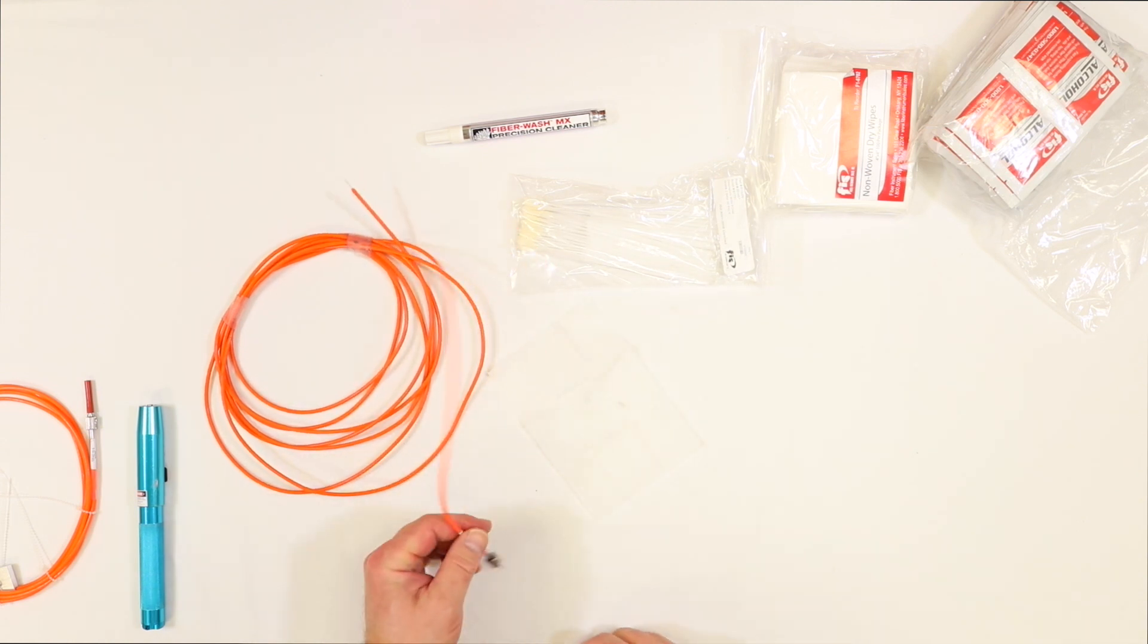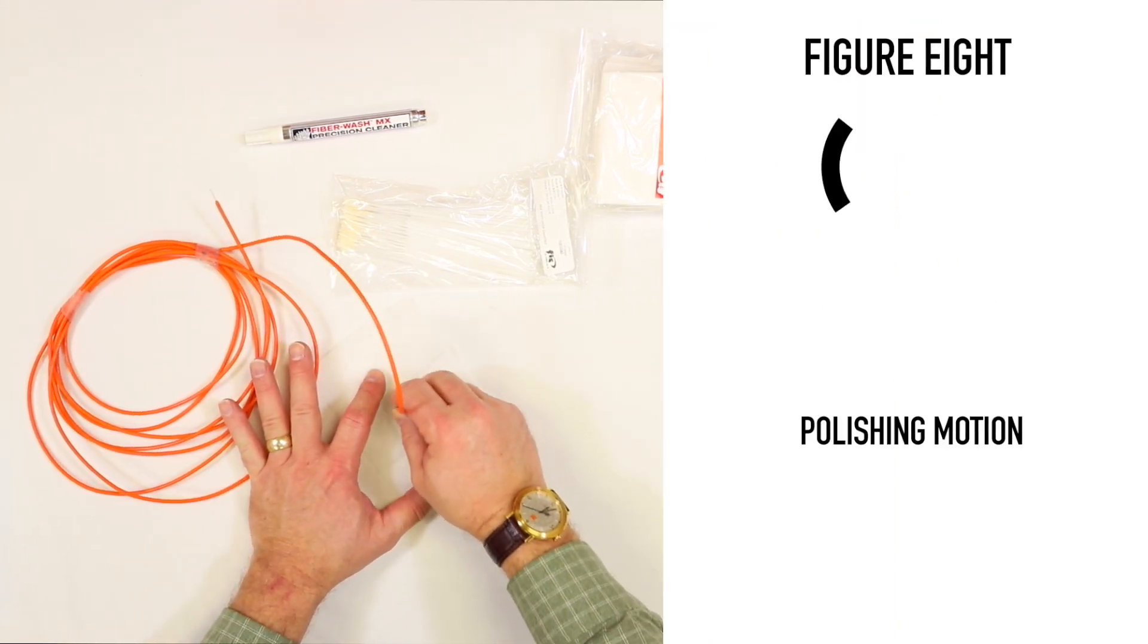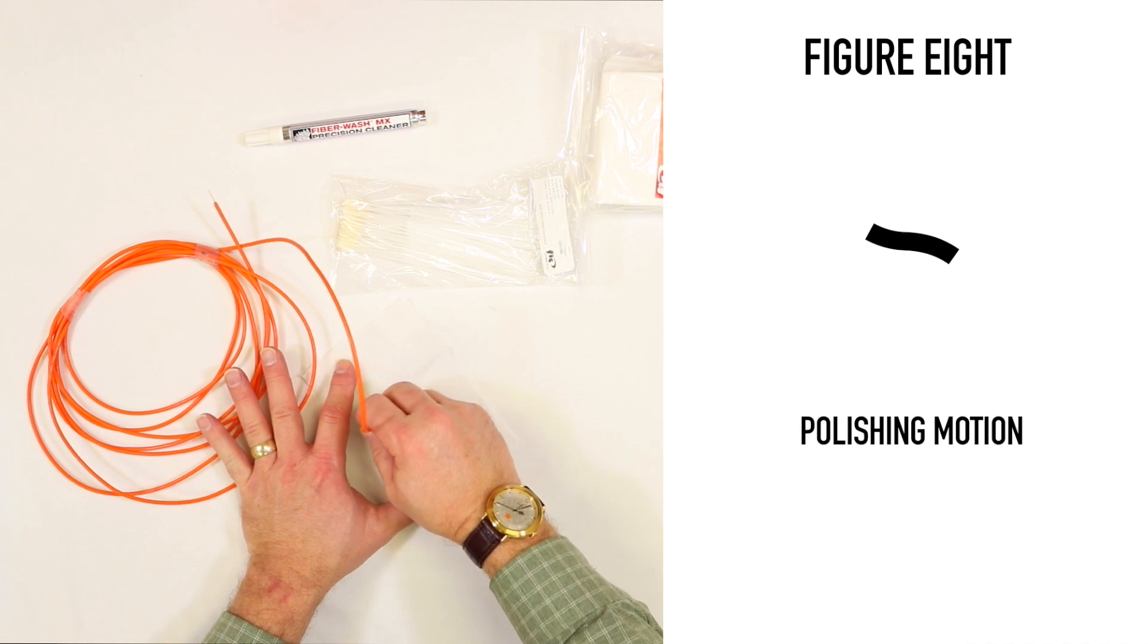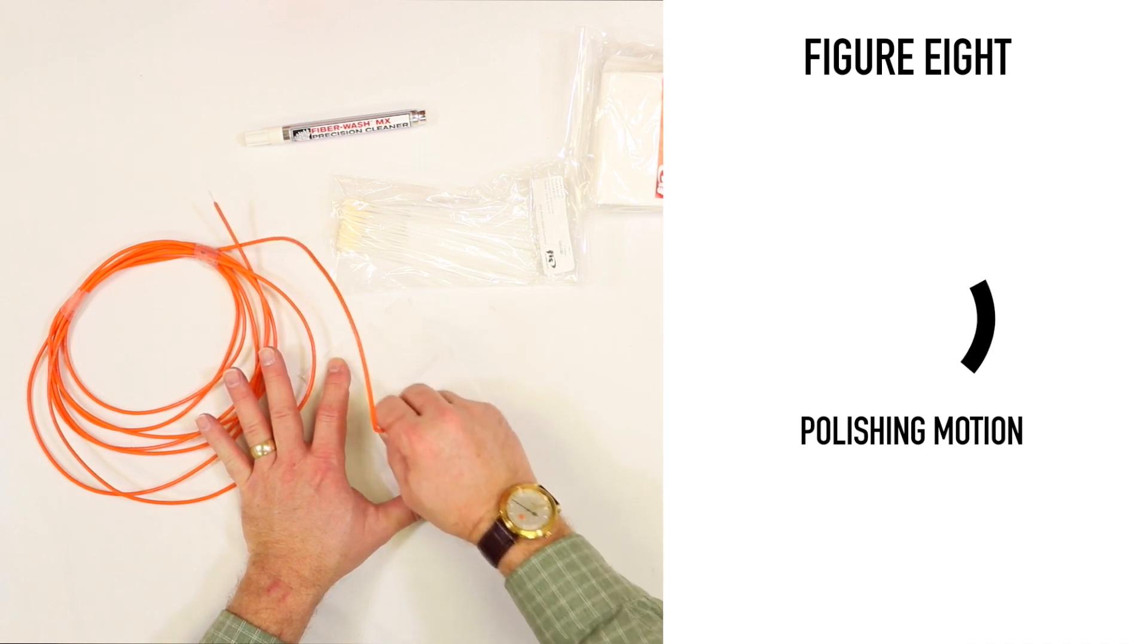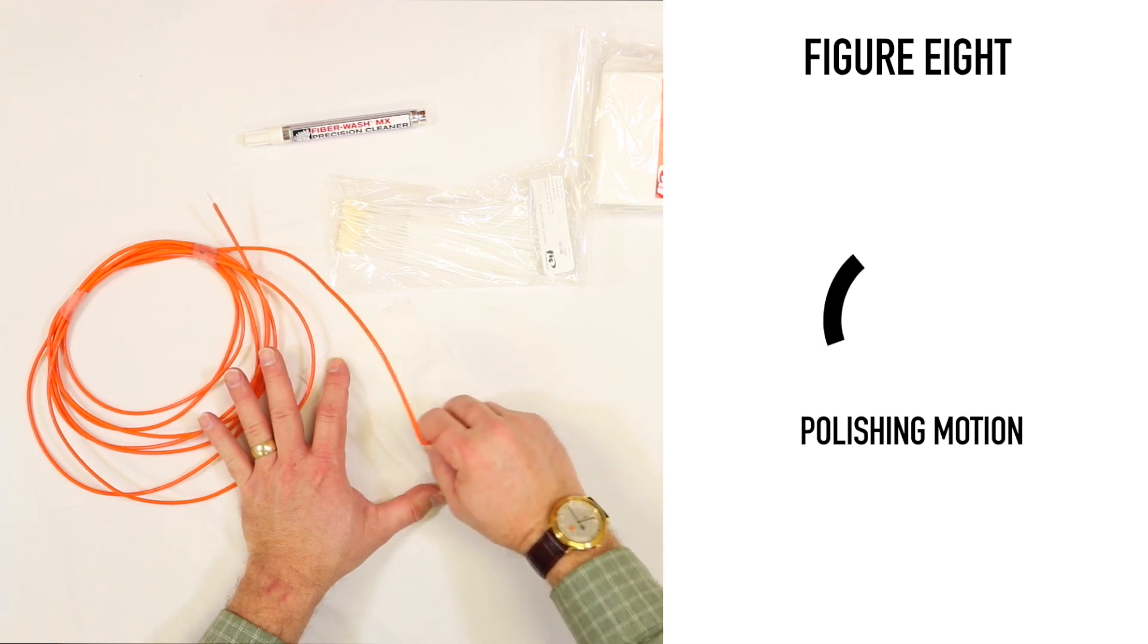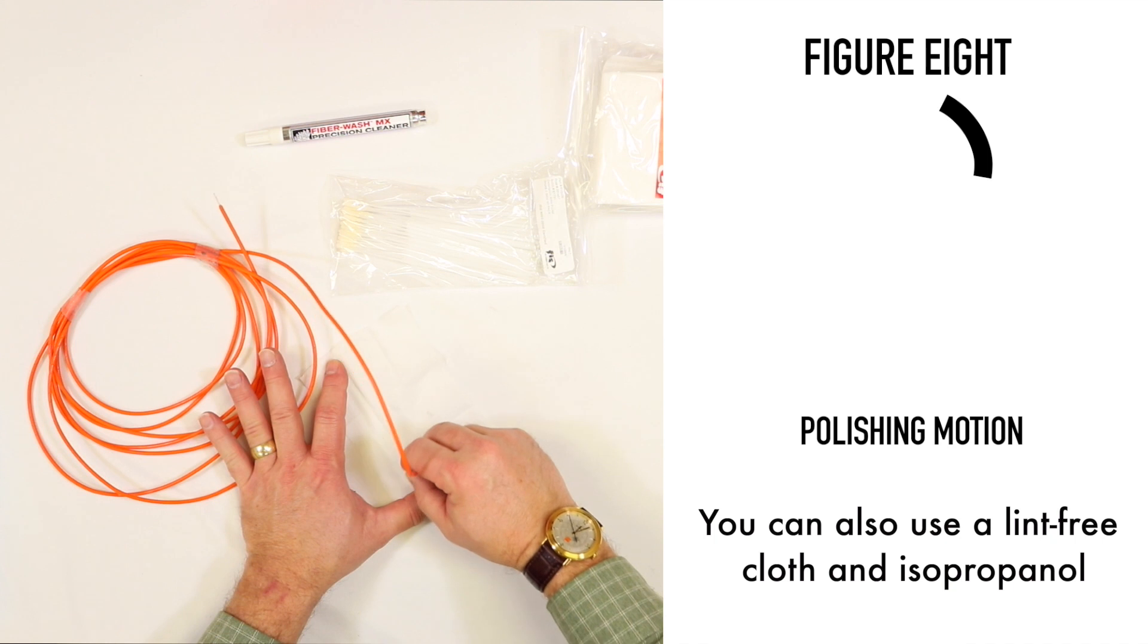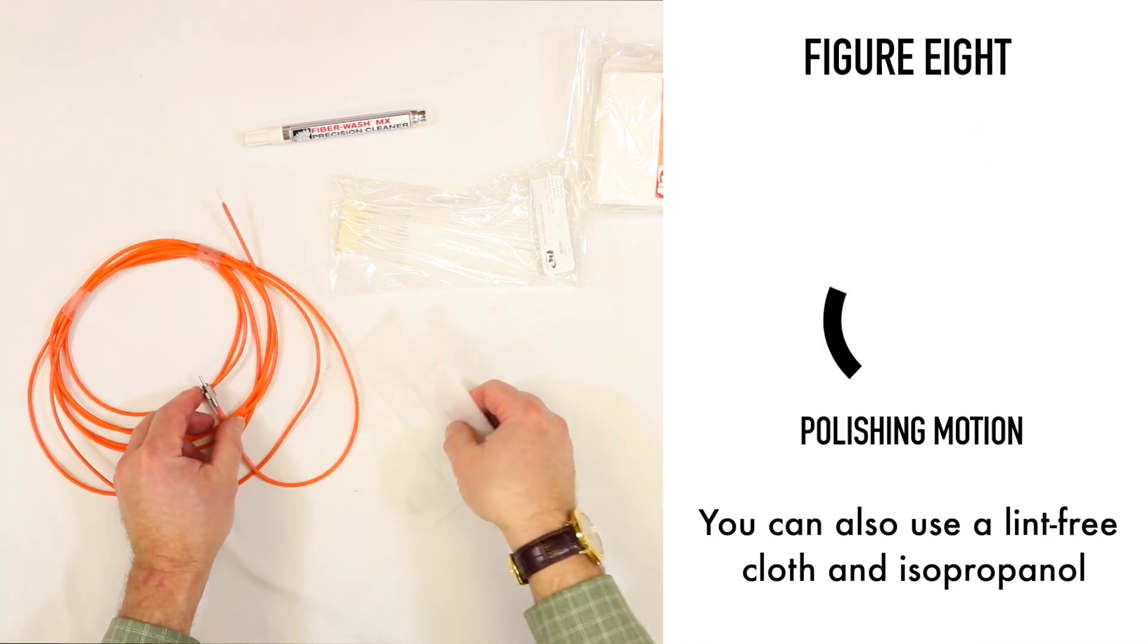Now we'll take the fiber itself and make a figure-eight polishing motion. This is going to clean off the fiber itself and it's not going to leave streaks. You can use this with a lint-free cloth and 100% isopropanol that you can get if you need to in a pinch.